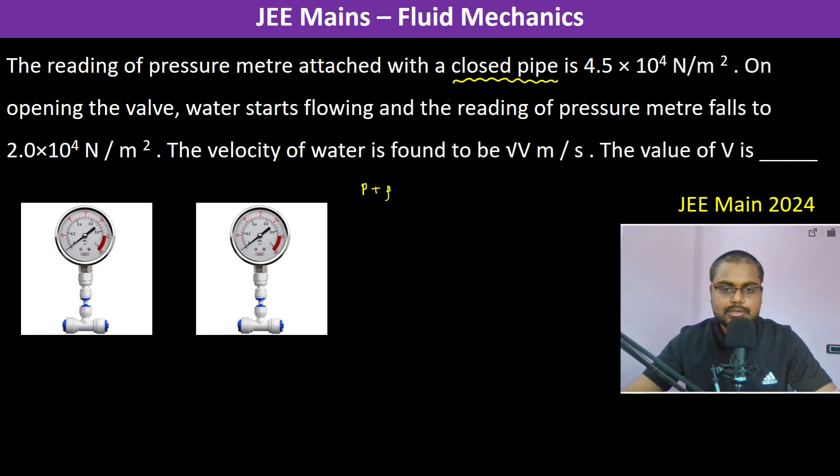P plus rho gh plus half rho v square is equal to constant. Therefore, when the water is not flowing the velocity of the water is zero.